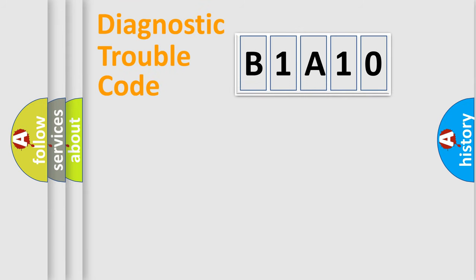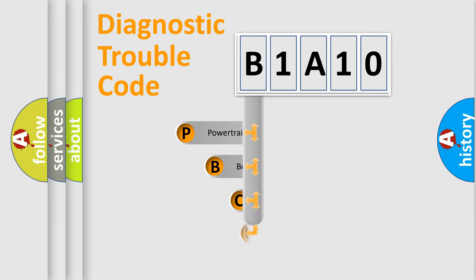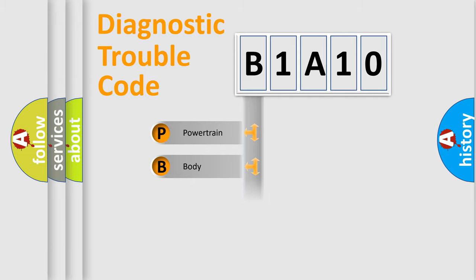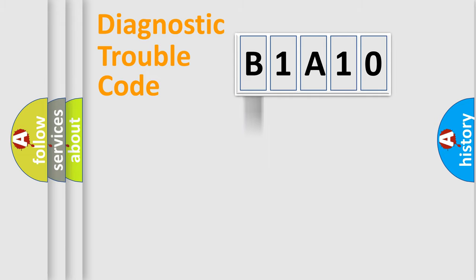Let's do this. First, let's look at the history of diagnostic fault code composition according to the OBD2 protocol, which is unified for all automakers since 2000. We divide the electric system of an automobile into four basic units: Powertrain, Body, Chassis, and Network.